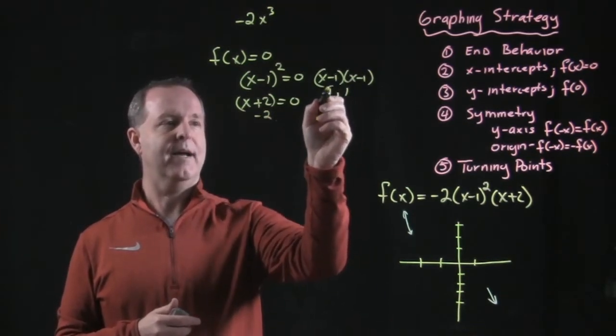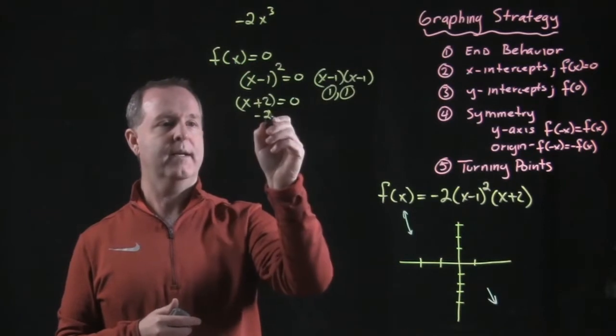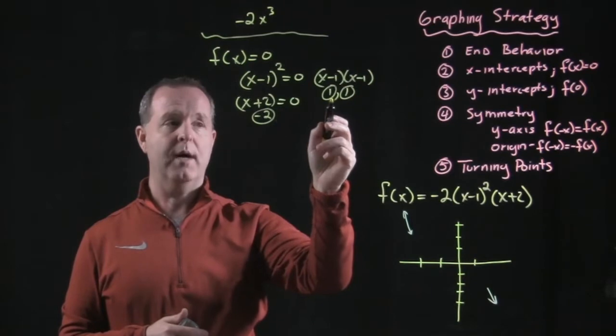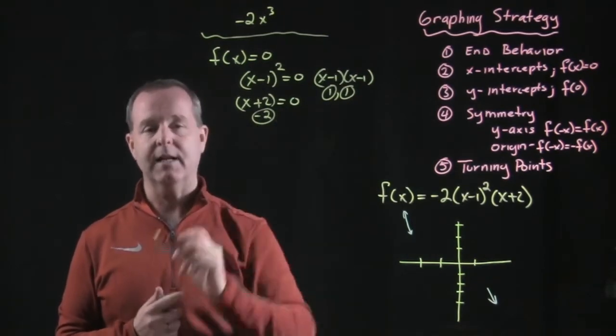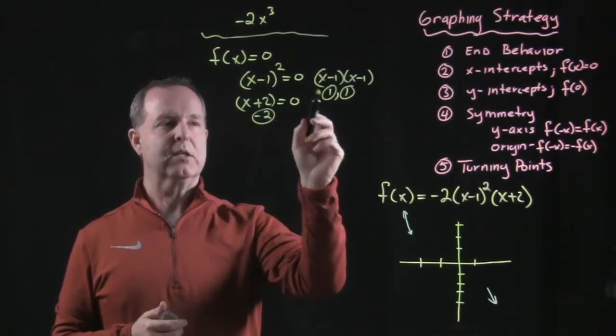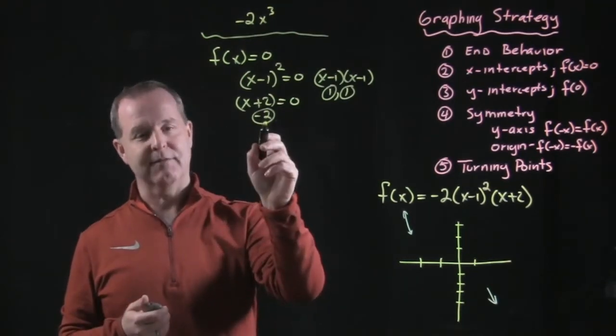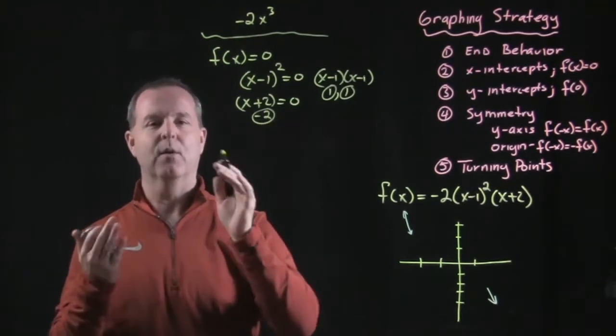So I see I have solutions of 1, 1, and negative 2. And the right way to say that is I have the solution of 1, multiplicity of 2, and negative 2 is a solution with multiplicity of 1.